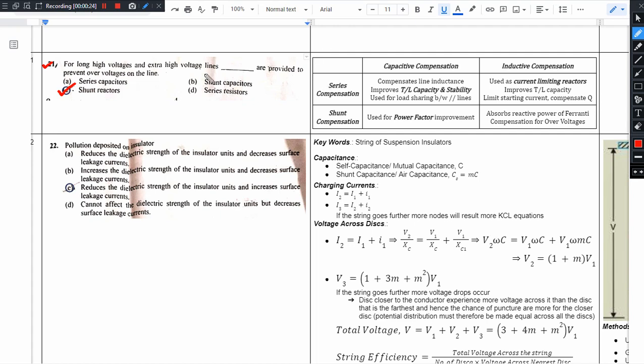In transmission lines, we need to know certain important things. One is about correction, second is about compensation. Correction, for example, what is the factor that affects transmission line performance and overall economy? That is correction. Here we usually correct the power factor. That is correction.